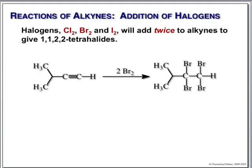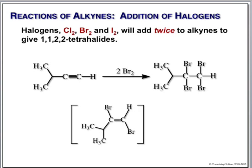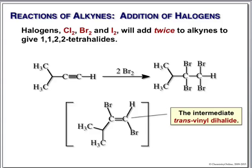When we add halogen to an alkyne, we form a 1,2-dihalide intermediate — a bromonium ion-type intermediate — the same sort of reaction we had with an alkene, except we do it twice. The bromine sits on the pi system; we form an intermediate trans-vinyl dihalide, and then add a second equivalent to make the 1,1,2,2-tetrahalide.